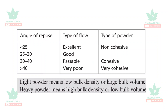The angle of repose also determines the type of flow. Less than 25 degrees indicates excellent flow for non-cohesive powders; 25–30 degrees is good flow; 35–40 degrees is possible flow applicable for cohesive powders; and greater than 40 degrees indicates very poor flow property, applicable for very cohesive powders.